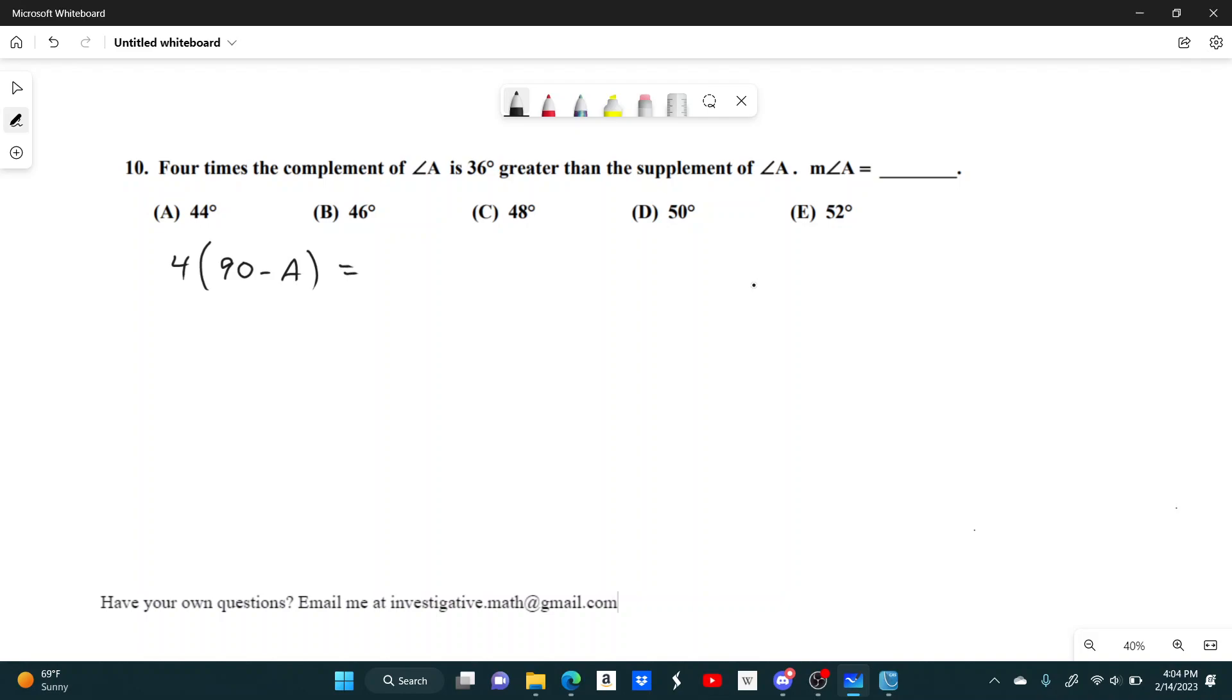So the supplement is pretty similar to the complement, except it has to do with 180 degrees. So instead the supplement of A would be 180 minus A. And it says it's 36 degrees greater, so I have to add 36 to this other side.